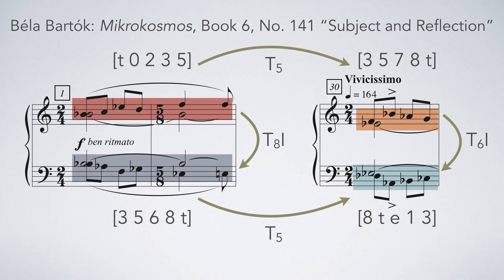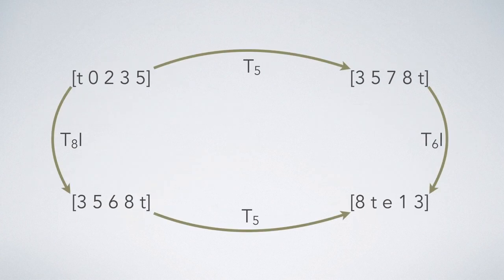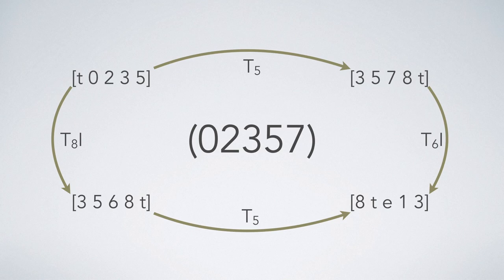This means that all four of those sets we first examined were only different versions of set class 0, 2, 3, 5, 7, just inverted and transposed to varying degrees.